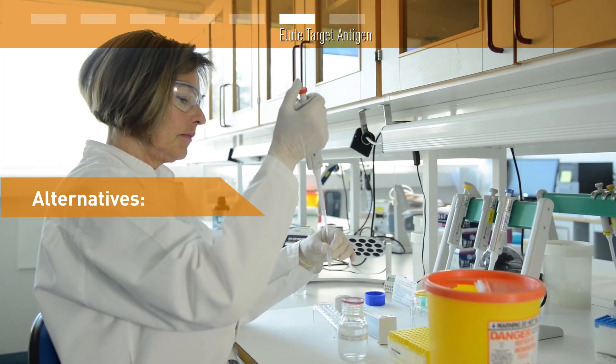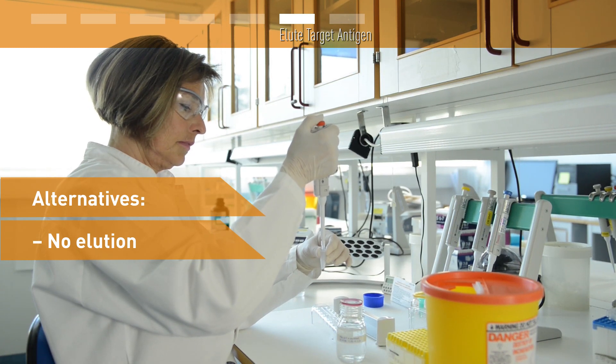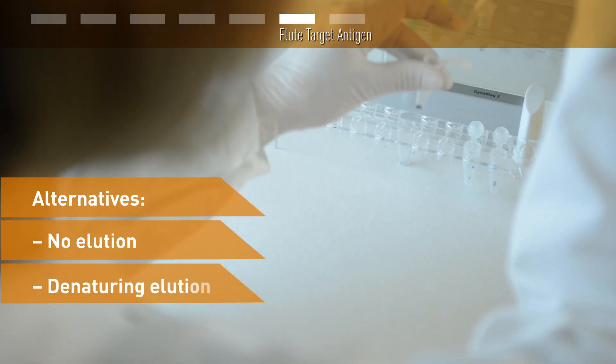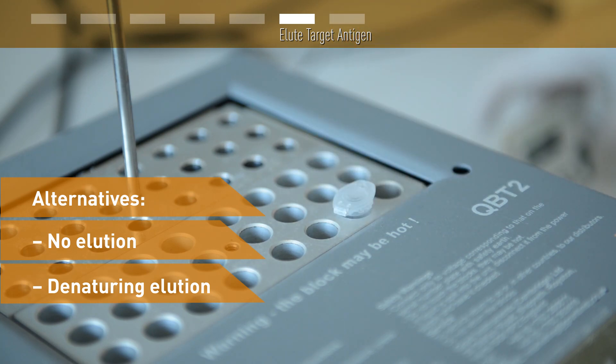You can either re-suspend your target protein while still attached to the solid phase and use this in your downstream experiments. You can elute the protein directly in your buffer for gel analysis or western blotting. When you elute in a small volume, you can keep your protein concentrated.